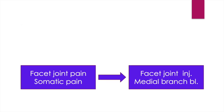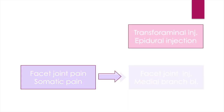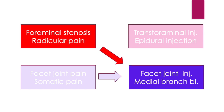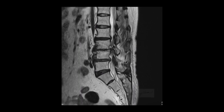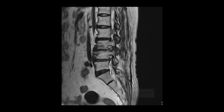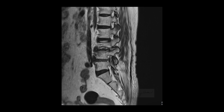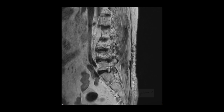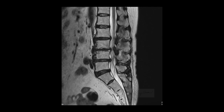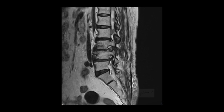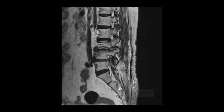Likewise, we prefer facet joint injection or medial branch block technique in case of facet joint pain. I'll introduce facet joint injection in case of foraminal stenosis and explain my logic of how it works. It is the serial sagittal T2 MRI image — sorry for the poor quality of the image. I should have shown an oblique sagittal image. It shows foraminal stenosis at the right L4-5 and L3-4, especially at the L4-5 level.